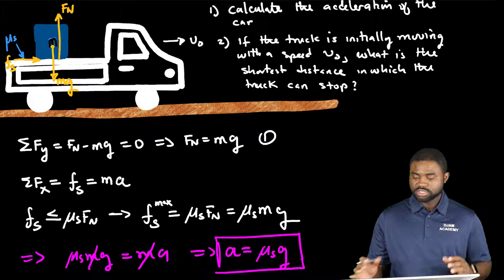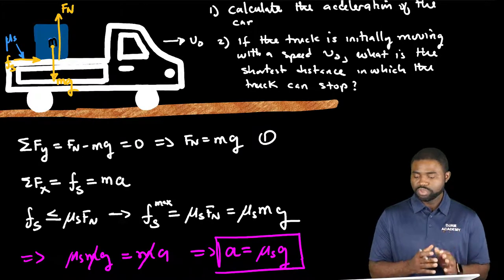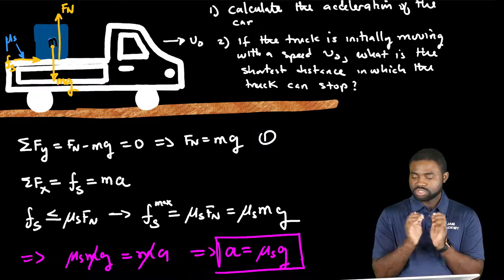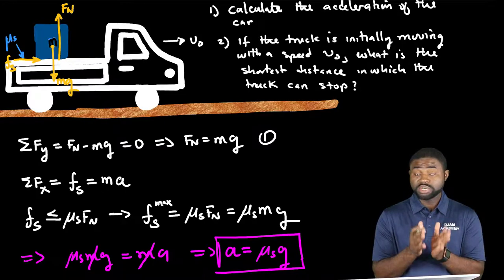Now the next question is, if the truck is initially moving with a speed v knot, what is the shortest distance in which the truck can naturally stop?